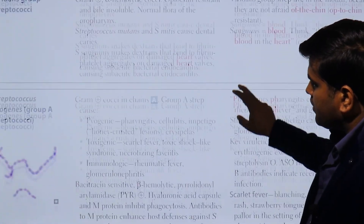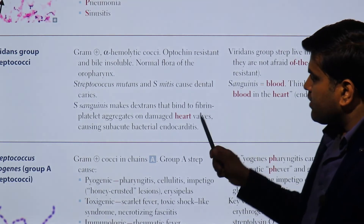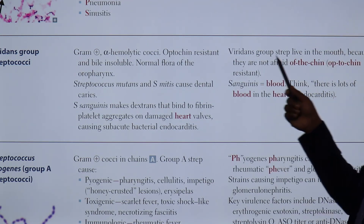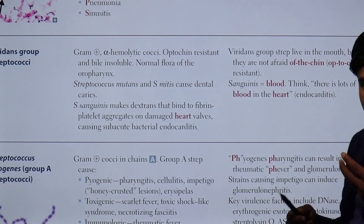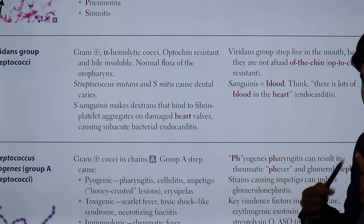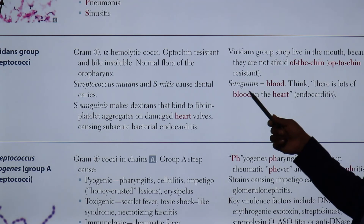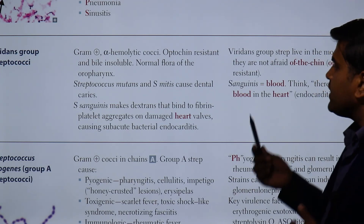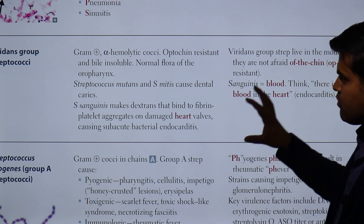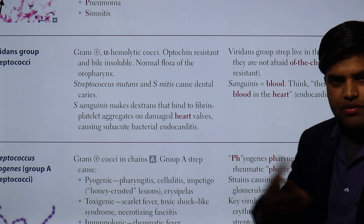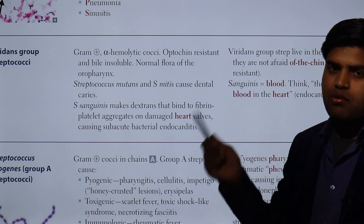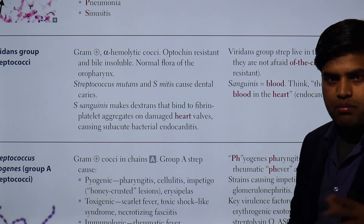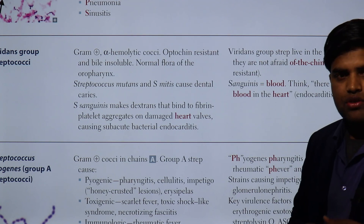We have now covered the alpha hemolytic group; the beta hemolytic streptococci will be discussed in the next lecture. To remember: viridans strep live in the mouth and are optochin resistant — they are not afraid of optochin. Streptococcus sanguinis — sanguinis meaning blood — is the species responsible for infective endocarditis. There will be scenario-based questions on this, so please comment below if you have any questions.